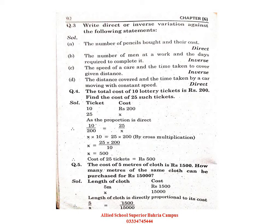As we increase the number of workers, the work will finish sooner — it will take fewer days. So as one quantity increases, the other decreases — this is inverse variation.